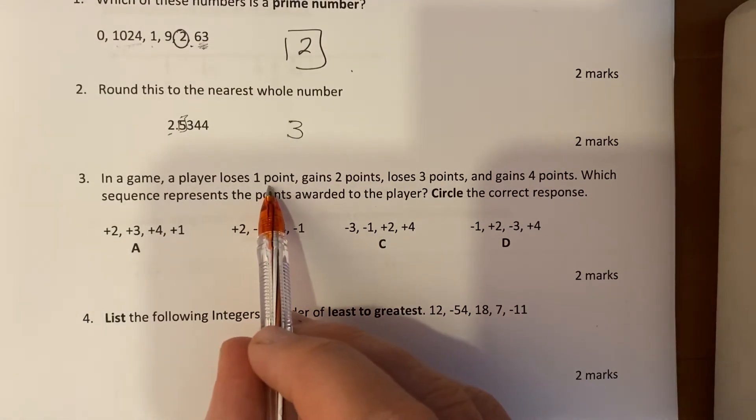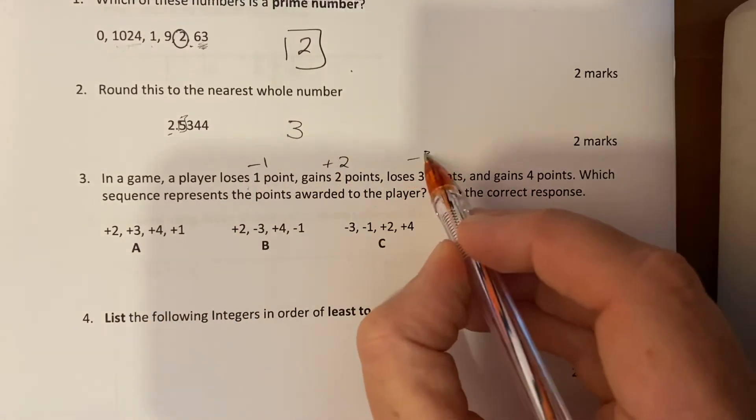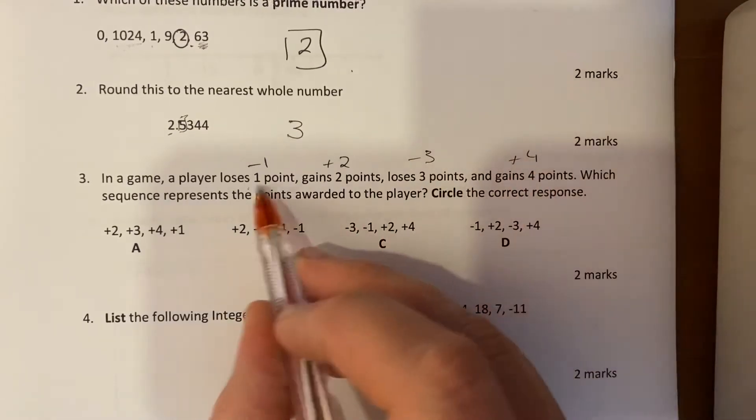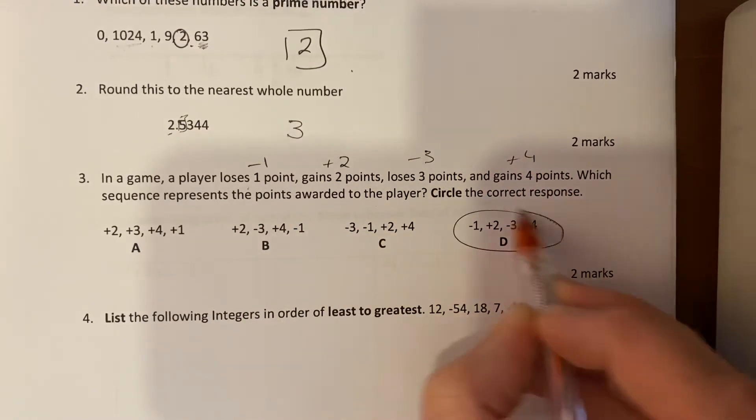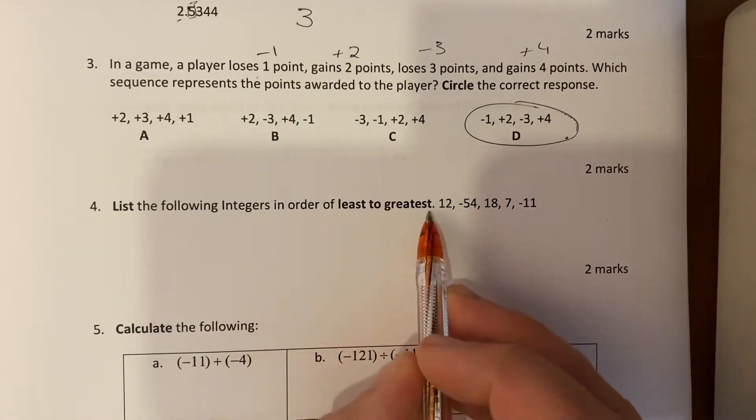Next one: a player loses a point, so starts by minusing a point, gains two points so adds two points, loses three points, gains four. So which one of these? Well, I think it's this one here indeed.